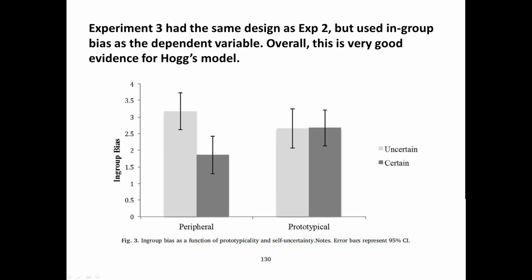Moving on to Experiment 3, it had the same design as Experiment 2 but used a different dependent variable — in-group bias, or preference for people also at the same college. Overall this set of results is very good evidence for Hogg's uncertainty identity theory. On the right-hand side, those given feedback that their personalities are typical of Americans generally — there's no difference in their ratings. Those two bars are the same height. But on the left-hand side, for those who were peripheral to the typical American, if given the certainty induction it didn't seem to matter and there's no increase in in-group bias. But those who are uncertain show a marked increase in in-group bias.